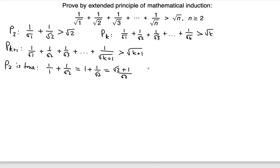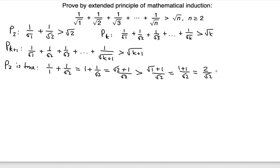We know this is greater than (√1 + 1)/√2, because √1 is smaller than √2 — replacing √2 in the numerator with √1 gives a smaller quantity. And √1 = 1, so that becomes (1 + 1)/√2 = 2/√2 = √2. So we've successfully shown that the left side is greater than √2.